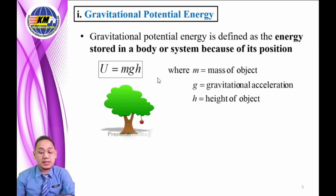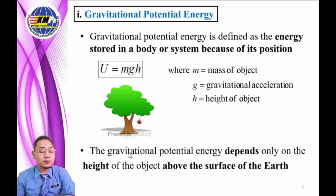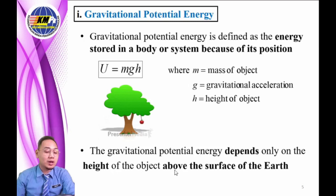Potential energy is denoted as capital U, where m is the mass of the object, g is the gravitational acceleration, and h is the height of the object. Note that gravitational potential energy depends only on the height of the object above the surface of the Earth.